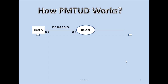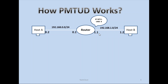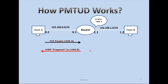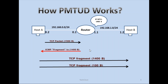Let's see how PMTUD works. Here I have Host A, a router, and Host B. On the router you can see it has a 1400-byte MTU. What is happening here is Host A will send a packet to the router — by default, a 1500 MTU packet. The packet will reach the router, the router will see it has a 1400-byte MTU, so the router will reply back to Host A and ask it to do fragmentation. Because of PMTUD, Host A will do minimal fragmentation and split this 1500-byte packet into two packets.